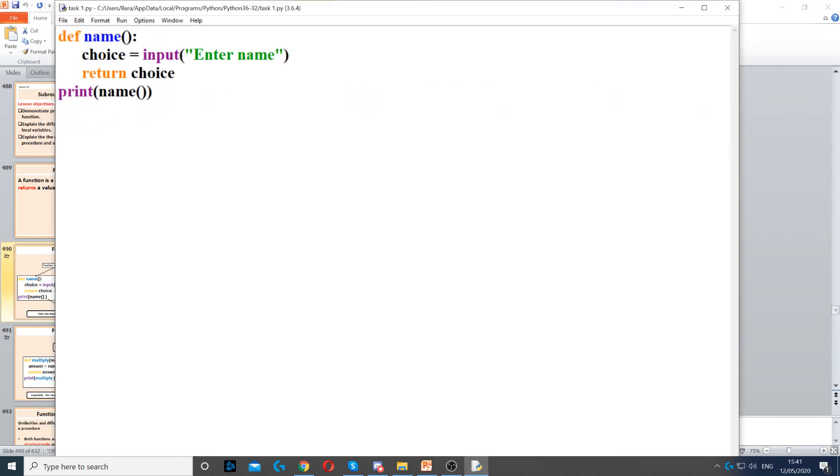You can also use parameters here. So rather than asking for a name, you can just type something here, say Tom. And then I can use choice as my parameter. It's similar to procedure. So choice is the parameter and Tom is the argument. Tom is going to be passed all the way to choice. And then when we return choice, it will return Tom, and we're printing Tom here.